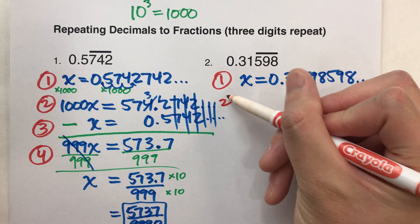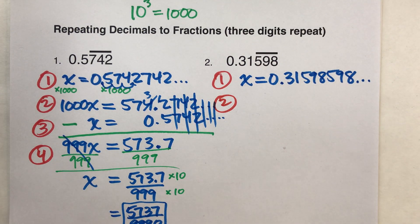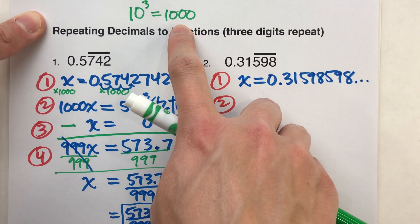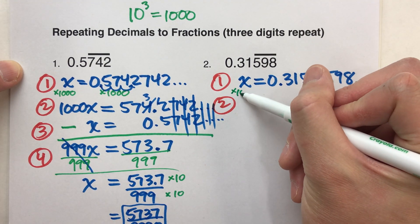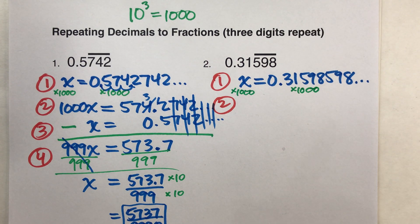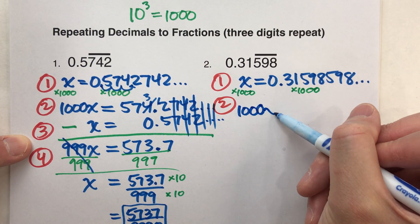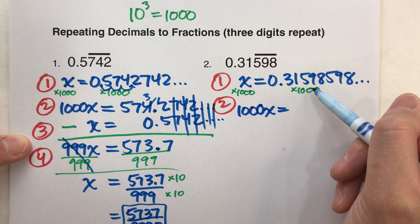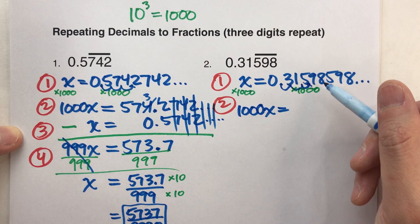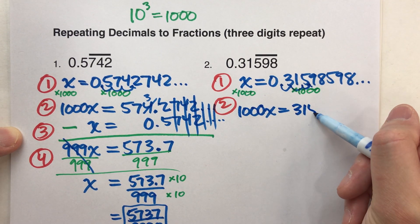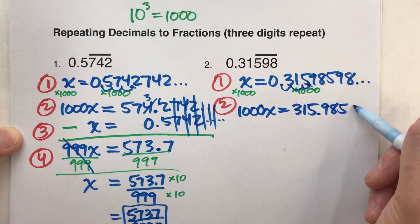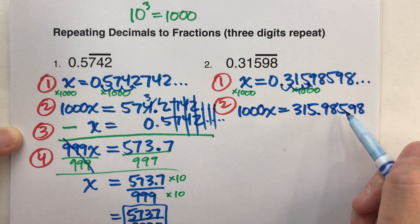Alright. Step 2, we are going to make a second equation by multiplying both sides by, since three digits are repeating, 10 to the third power, or 1,000. So I need to multiply both sides by 1,000. Alright, when I do that, 1,000 times x is 1,000x. On the other side, multiplying a decimal by 1,000 means, move that decimal over three places, I end up getting 315.98598, okay.